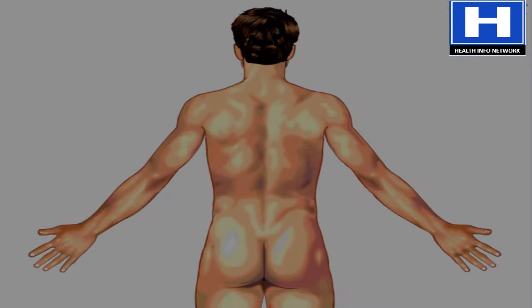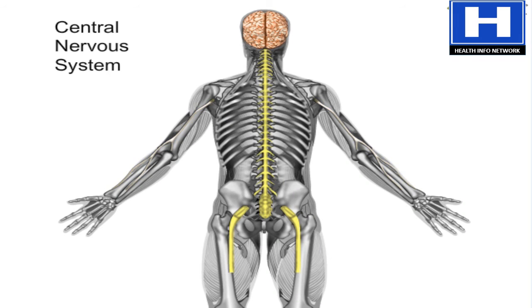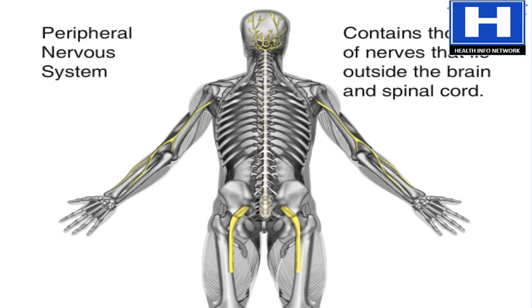The nervous system is made up of two parts, each containing billions of neurons. The first part is the central nervous system. It contains the brain and spinal cord, which is a fibrous rope-like structure that runs through the spinal column down the middle of the back. The other part is the peripheral nervous system, which consists of thousands of nerves.